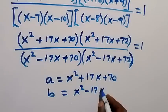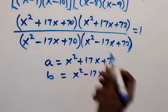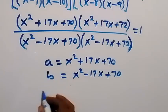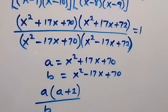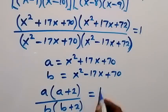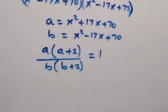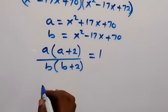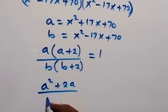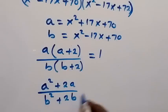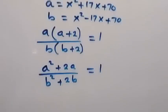We can rewrite this fraction in terms of a and b: the numerator becomes a times (a plus 2), and the denominator becomes b times (b plus 2), all equal to 1. Expanding gives a squared plus 2a over b squared plus 2b equals 1.